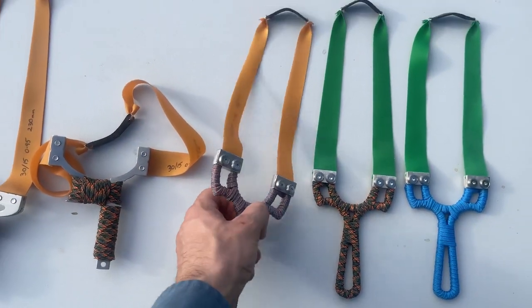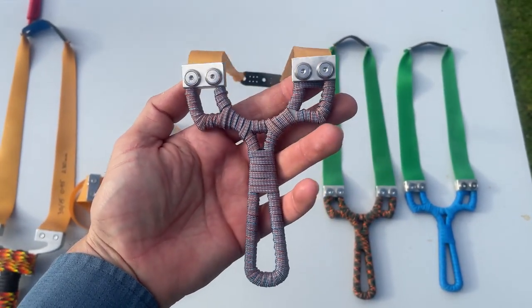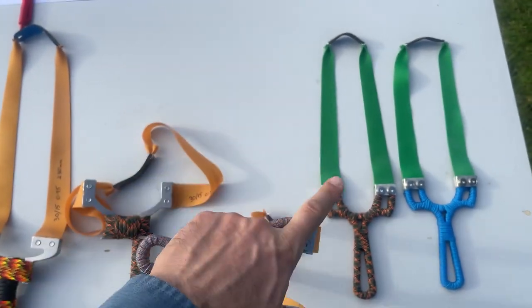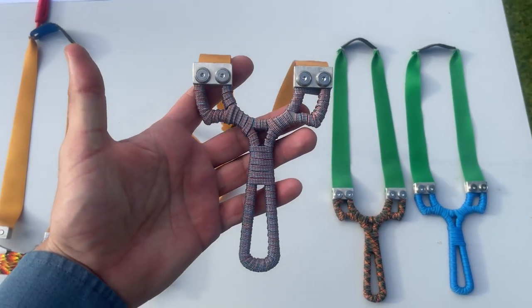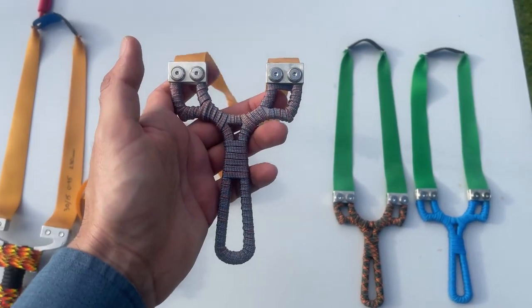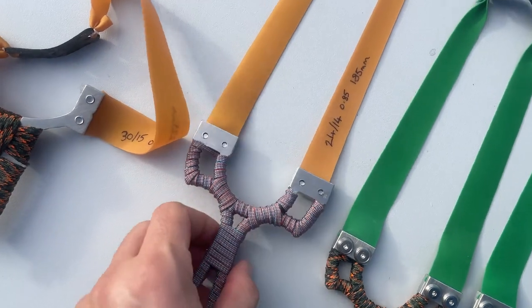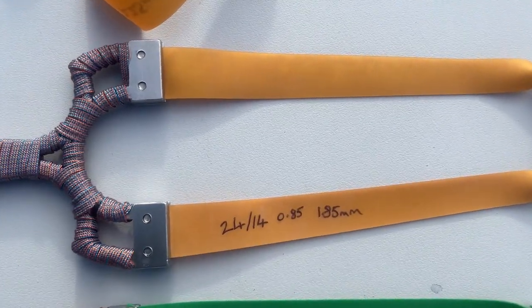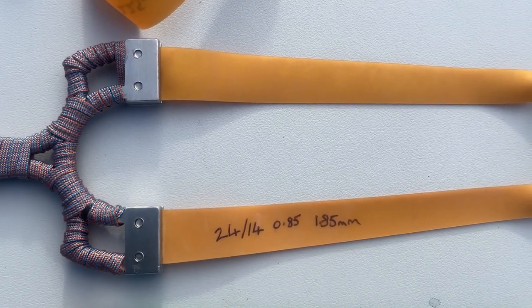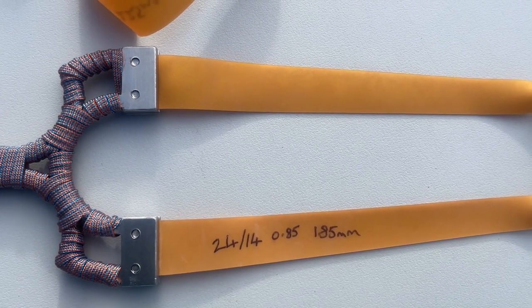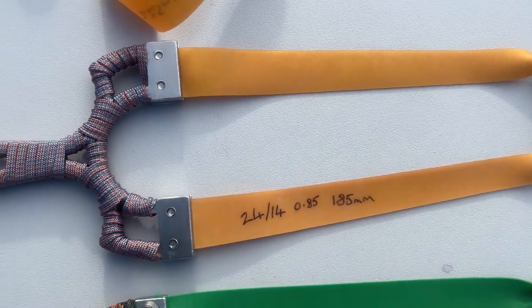And then we have my personal favorites, I have the Ninja, call it the Ninja XL. It's same as the Ninjas but it's 100 mil fork tip to fork tip, and we're shooting 24 to 14, 0.85 Precise Gold with an active band length of 185 millimeters.